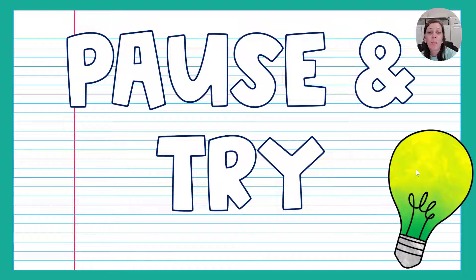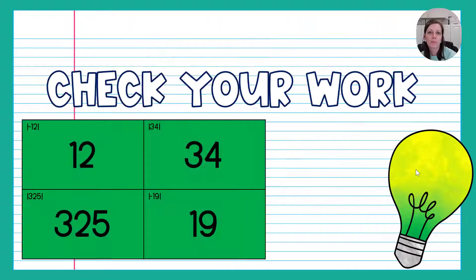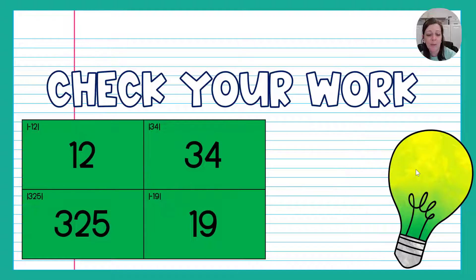Go ahead and pause the video and find the absolute value of the next four problems in your notes, then resume the video to check your work. The absolute value of negative 12 is 12. The absolute value of 34 is 34. The absolute value of 325 is 325, and the absolute value of negative 19 is 19. How did you do? Hopefully you did well. If not, let's figure out where you went wrong and correct those mistakes.